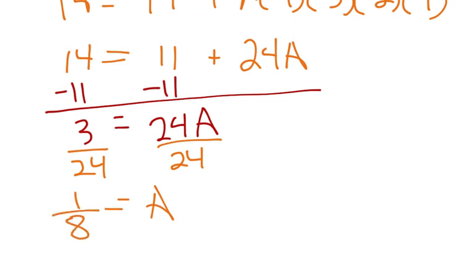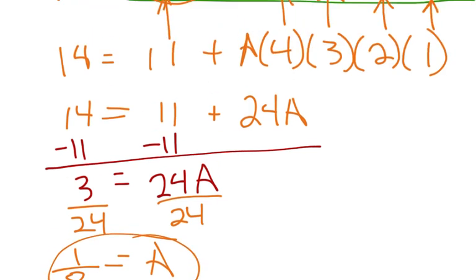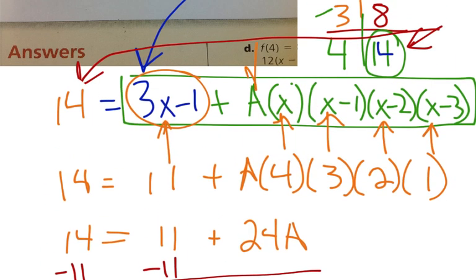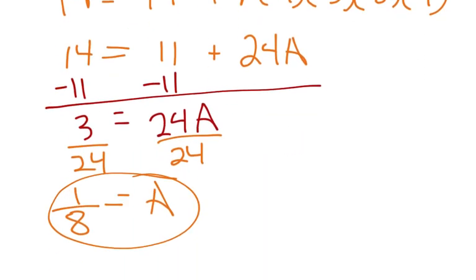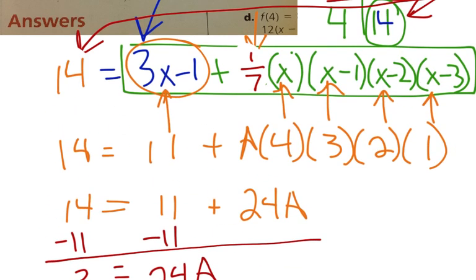And so my final answer is, I just take this a value and put it back up into this original equation here in place of a. So if I just erase the a and put in my 1 over 7, or sorry, 1 over 8, then I have my answer.